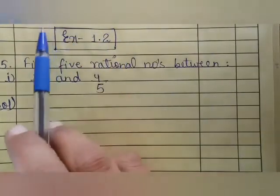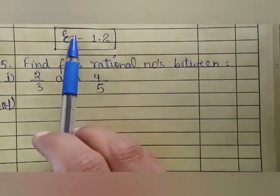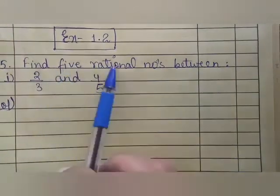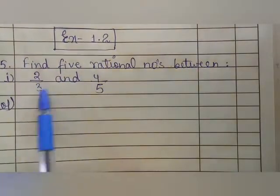Today we are going to study exercise 1.2, question number 5: Find 5 rational numbers between 2 upon 3 and 4 upon 5.